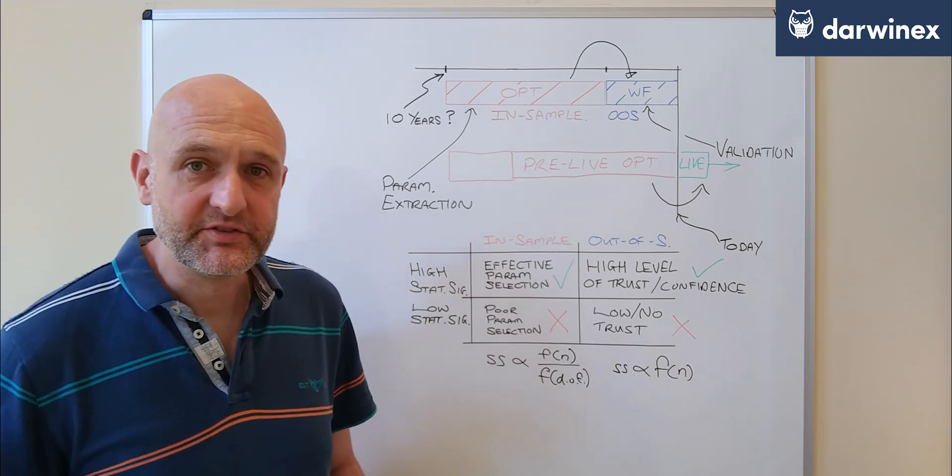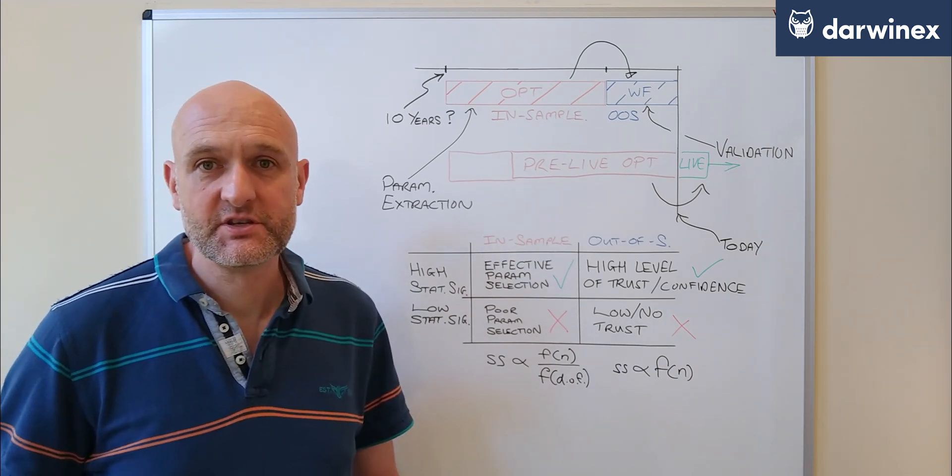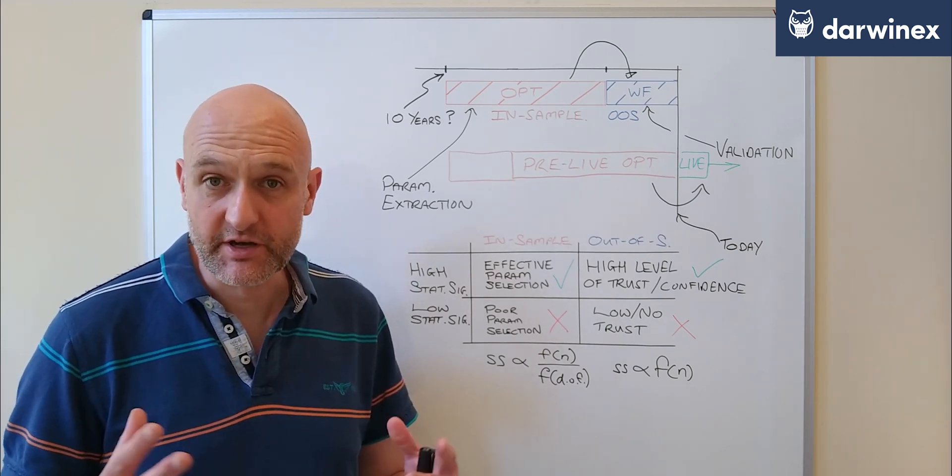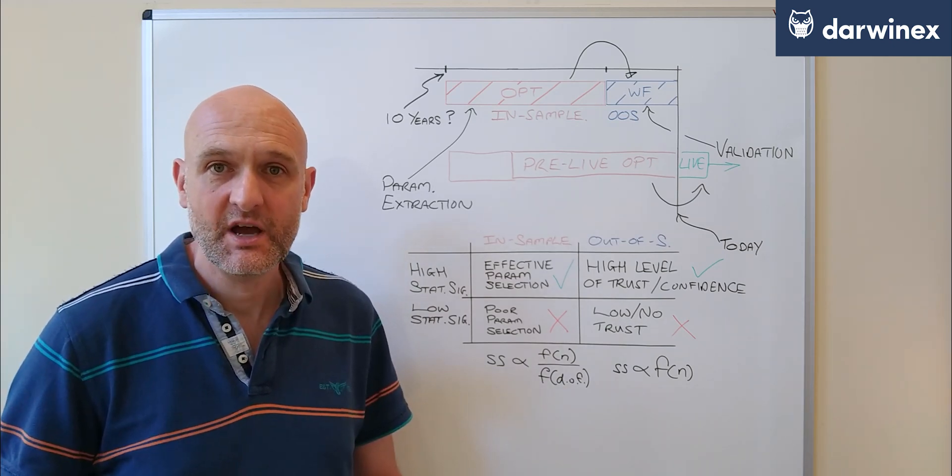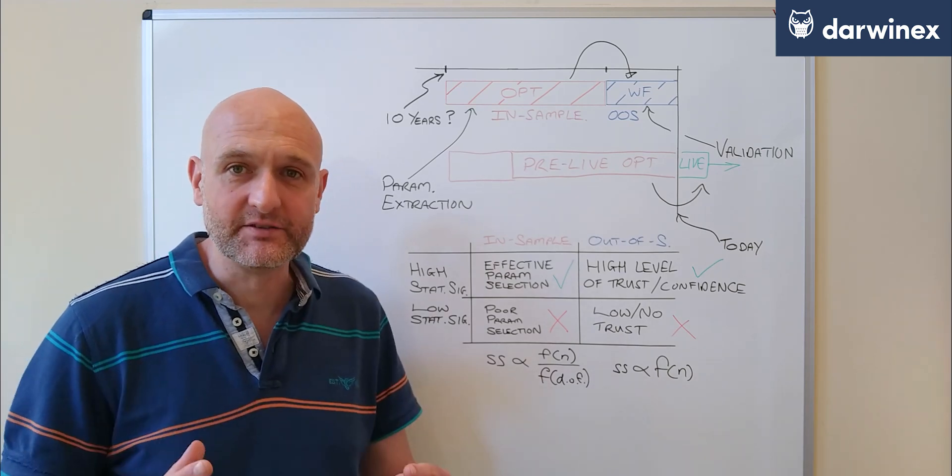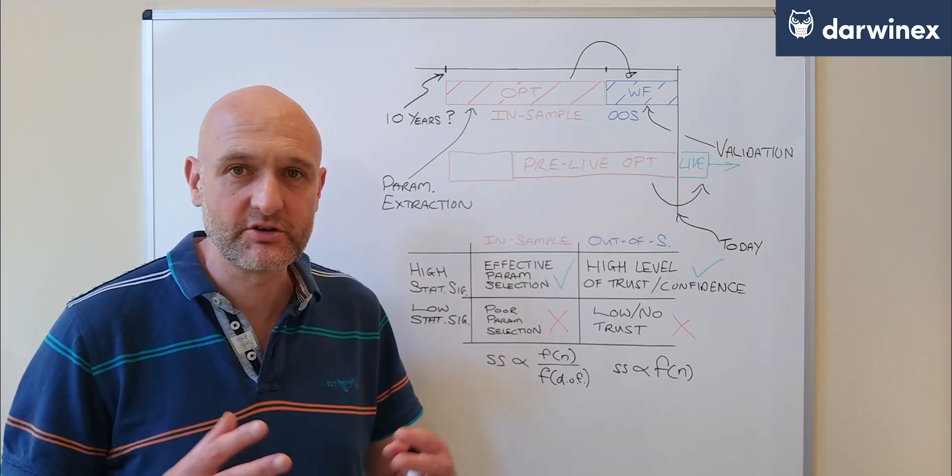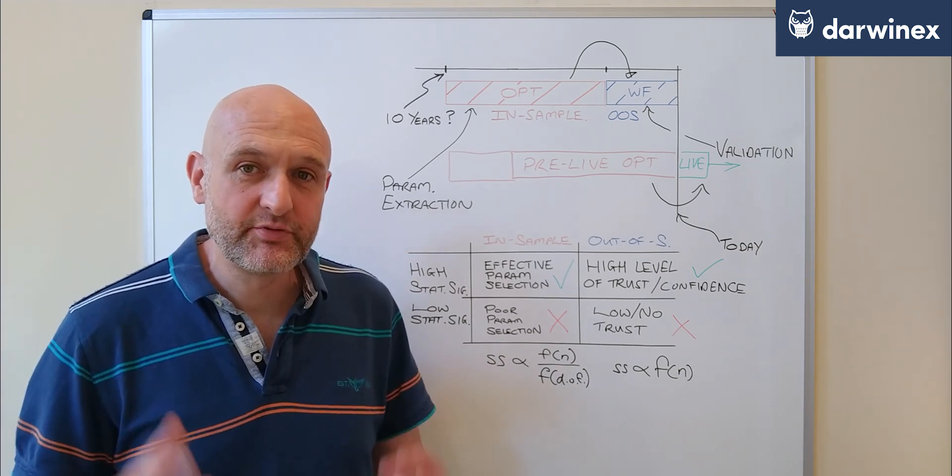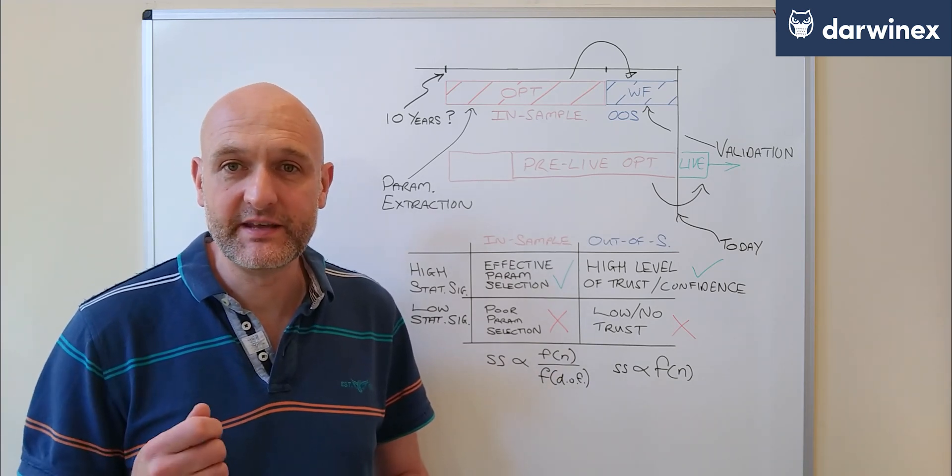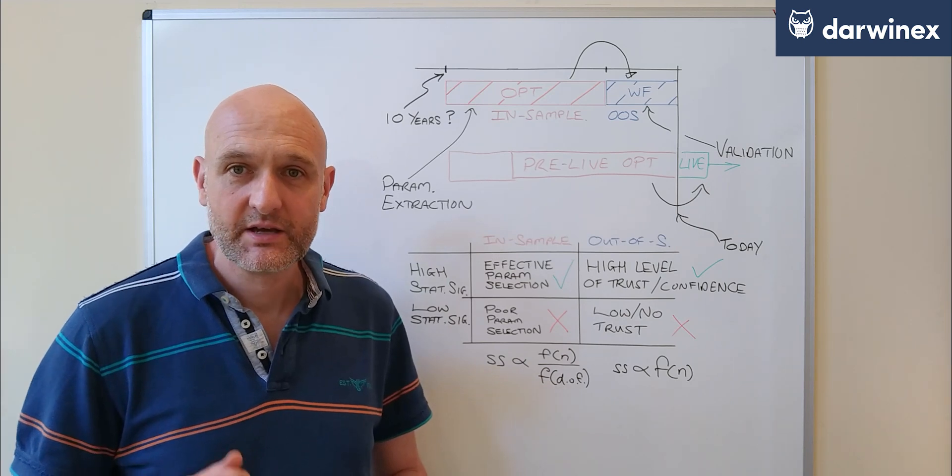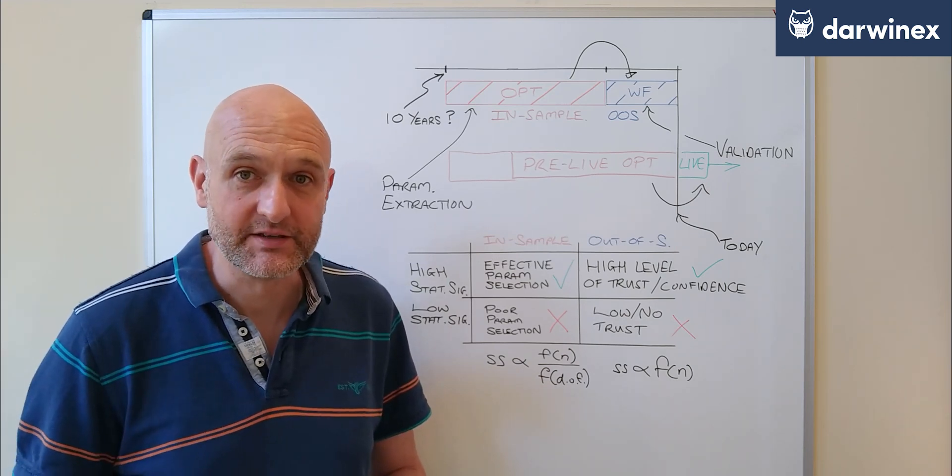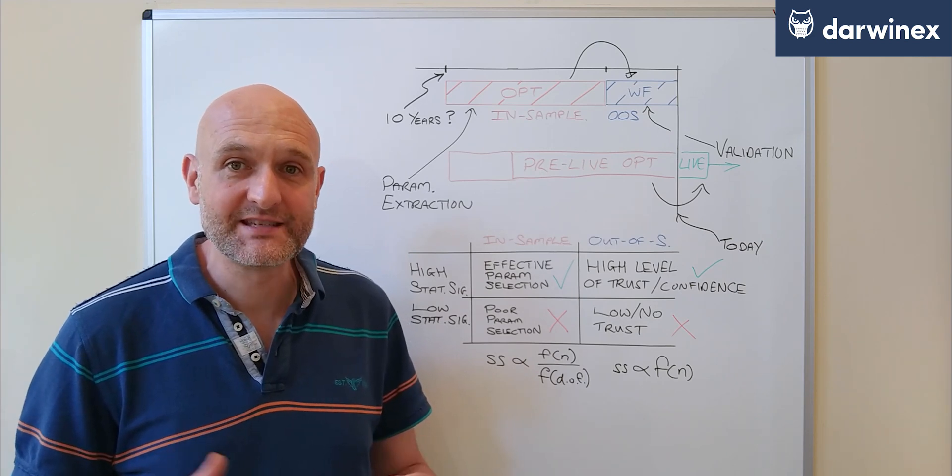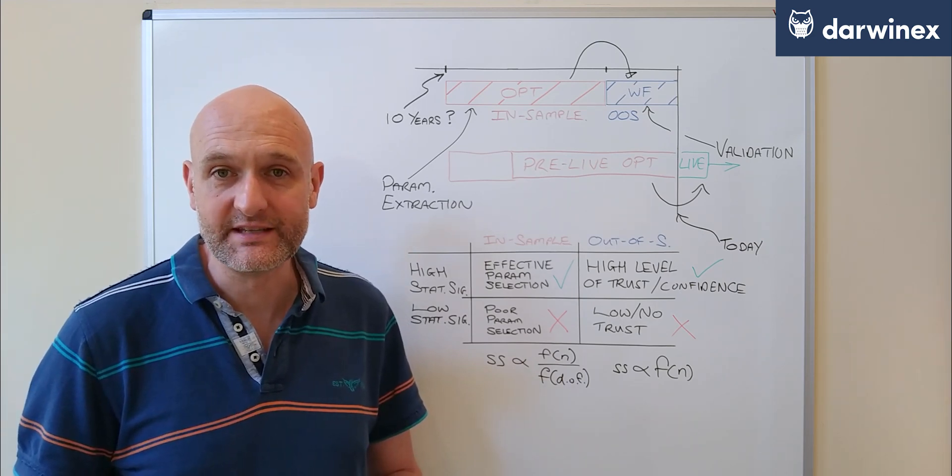Now we require that the statistical significance is of a good level in both the in-sample and the out-of-sample if we're going to have a successful process. And so we need to try to balance the statistical significance across these phases. And it's this balancing process that will determine how big the in-sample phase needs to be compared to the out-of-sample phase. Now the more degrees of freedom that you use, the bigger the in-sample optimization phase will need to be.